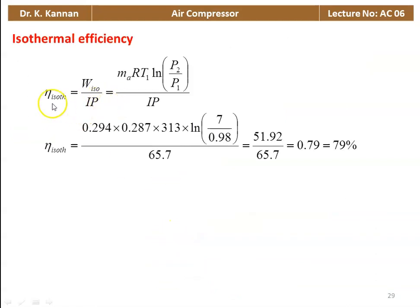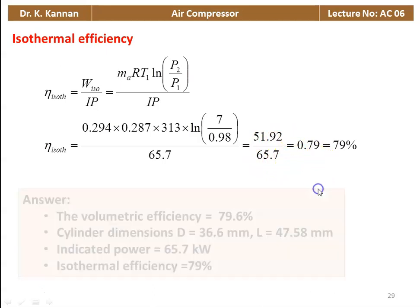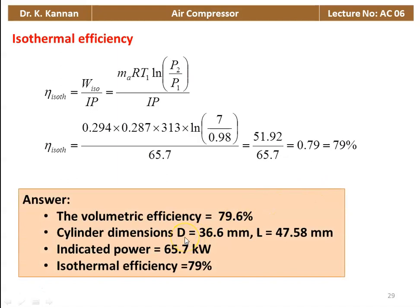Isothermal efficiency equals isothermal work divided by indicated power. Isothermal work equals MA into R into T1 into logarithm of (P2 by P1), divided by indicated power. So 0.294 into 0.287 into 313 into ln(7 by 0.98), numerator equals 41.92, divided by 65.7 equals 0.79, which is 79%. Answer: volumetric efficiency 79.6%, diameter 36.6 cm, stroke length 47.58 cm, indicated power 65.7 kW, isothermal efficiency 79%.